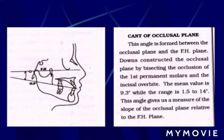Now starting with the dental parameters. The first is the cant of the occlusal plane. This angle is formed between the occlusal plane and the FH plane. Downs constructed the occlusal plane by bisecting the occlusal surfaces of the first permanent molars and incisors. The mean value is 9.3 degrees. It gives a measure of the slope of the occlusal plane relative to the FH plane.